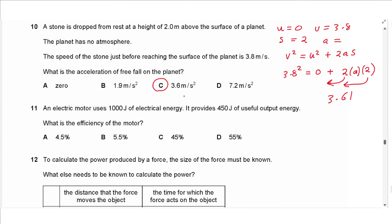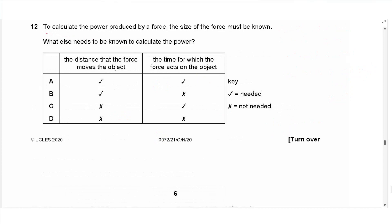That gives an answer of 3.61, which approximates to 3.6 m/s², making the answer C. Question 11 says: an electric motor uses 1000 joules of electrical energy and provides 450 joules of useful output energy. What is the efficiency? Using output energy divided by input energy times 100, that gives 45%, so the answer is B.